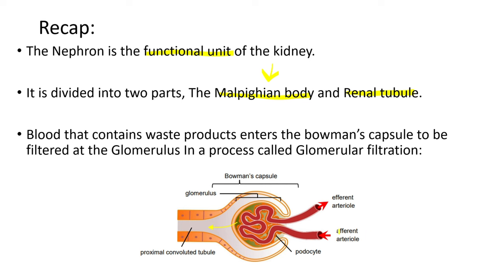Remember that the blood that contains waste products enters the Bowman's capsule — this whole cup-like structure — and then it will be filtered here at the glomerulus, at this coiled structure. This process is called glomerular filtration. Glomerular filtration is whereby the blood is filtered at the glomerulus, meaning that the waste products in the blood will be filtered into the Bowman's capsule. You can see from the image that the waste products are moving out of the blood and then moving to the proximal convoluted tubule.